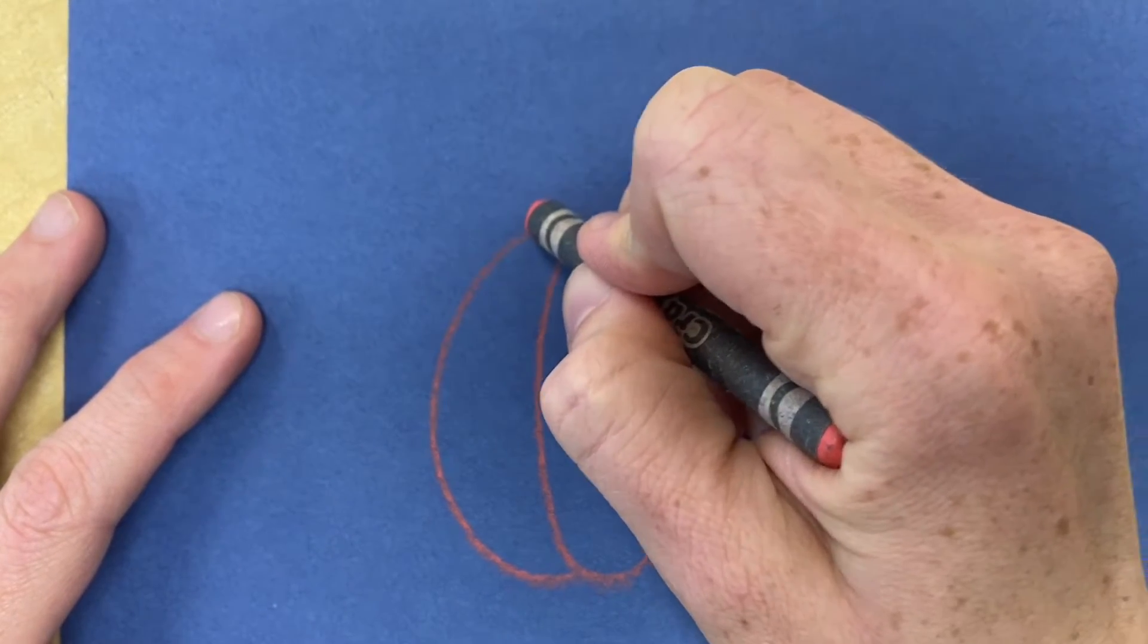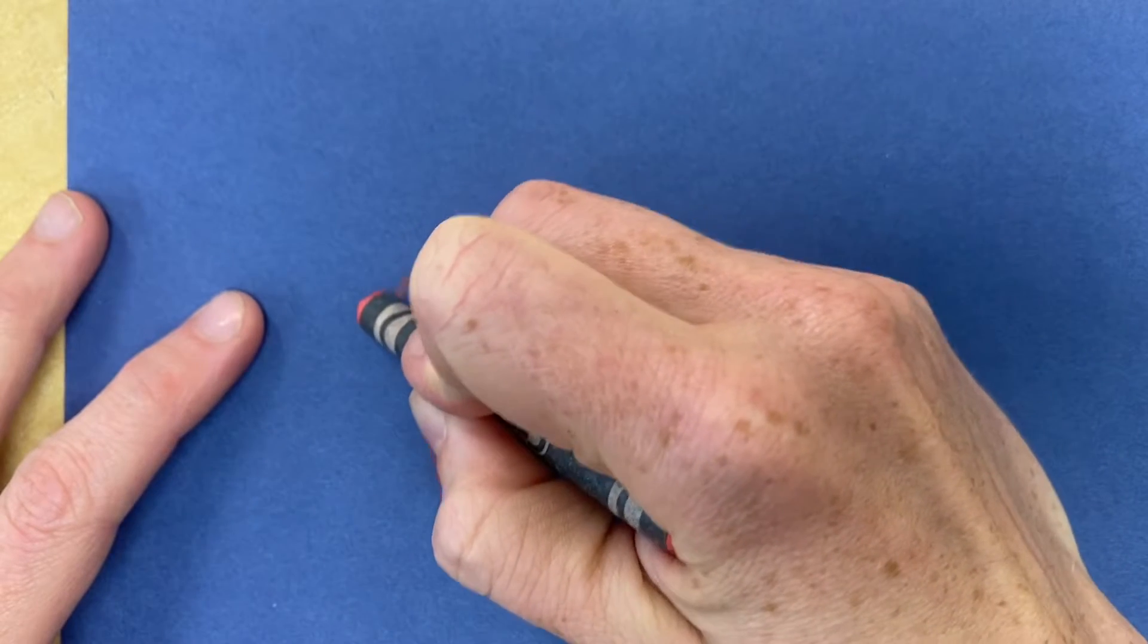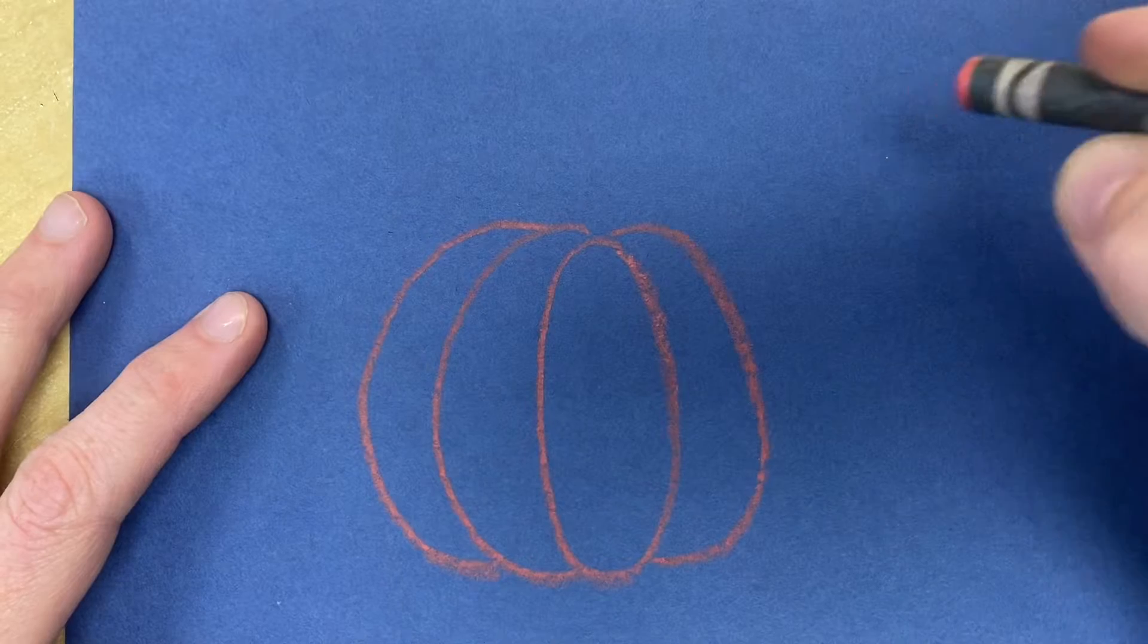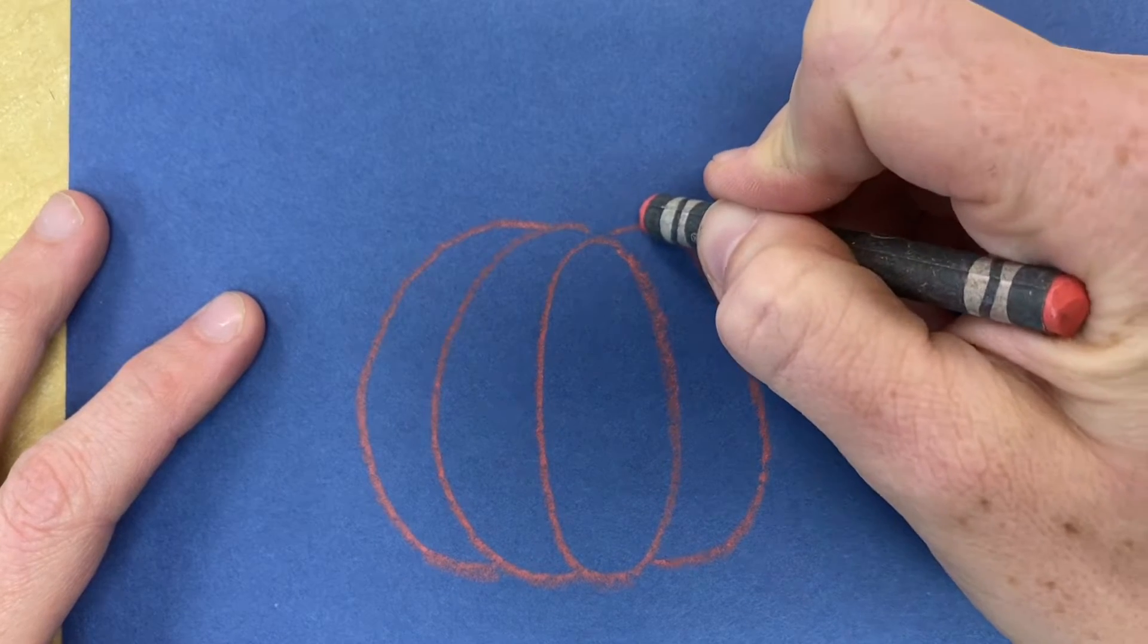Now go ahead and add another curved line on the side and make sure it touches the first banana shape you drew. Then you can repeat it on the other side.